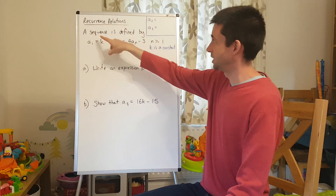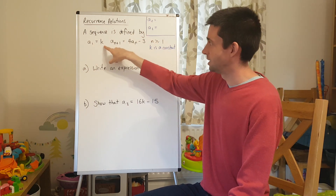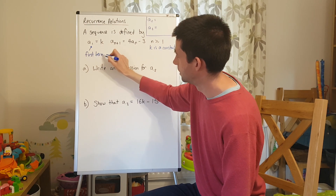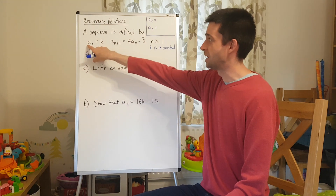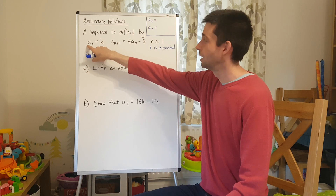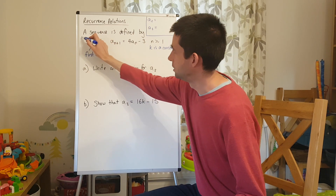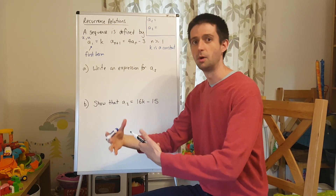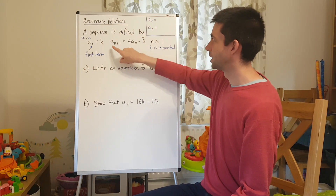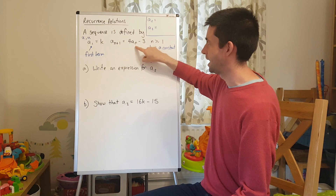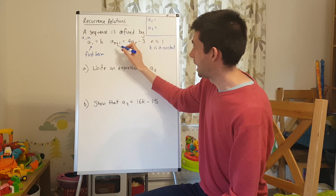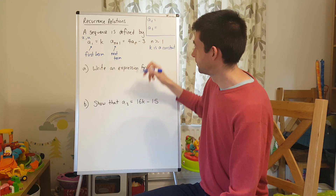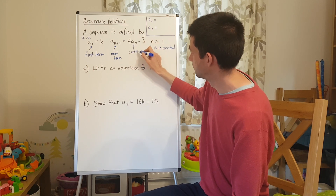What we have here is a sequence defined by a1 equals k. Now, a1 — the number 1 means that this is the first term of this sequence, and a is just used to denote the fact that it is a term. Sometimes, rather than a, you can use x or you can use u, but it all means the same thing — so u1 would be the first term. We then have the rule: a_{n+1} equals 4a_n minus 3. Now, a_{n+1} is the next term in your sequence, and a_n is the current term.